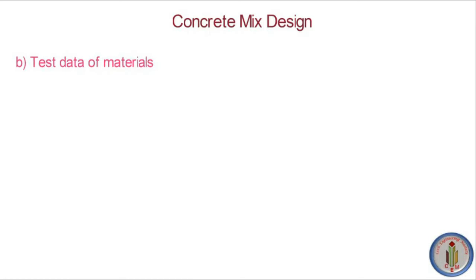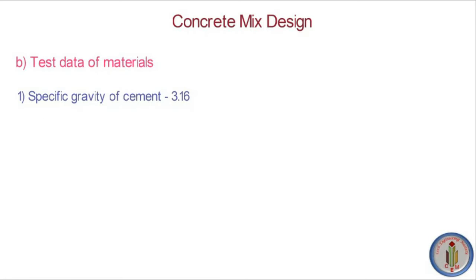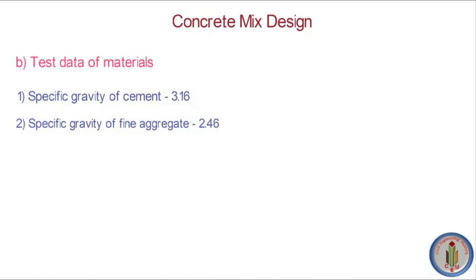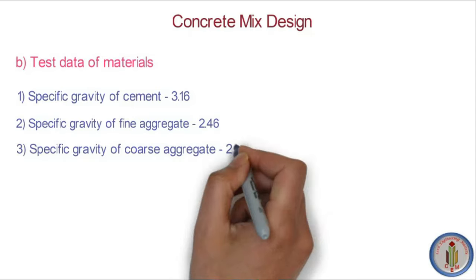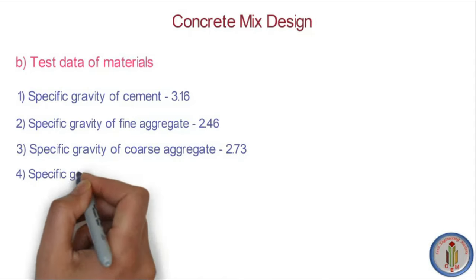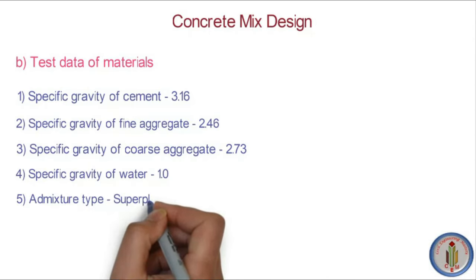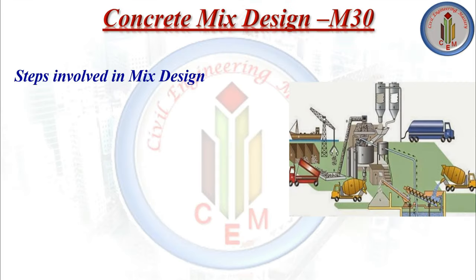Next, the test data of materials: specific gravity of cement is 3.16, specific gravity of fine aggregate is 2.46, specific gravity of coarse aggregate is 2.73, specific gravity of water is 1, and admixture type is super plasticizer. These are all the required data which we need to use in the calculation.